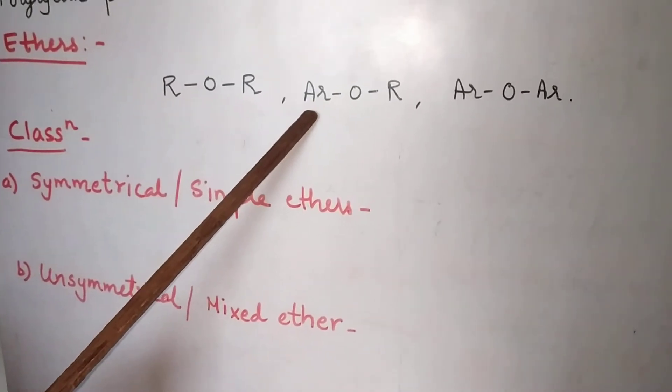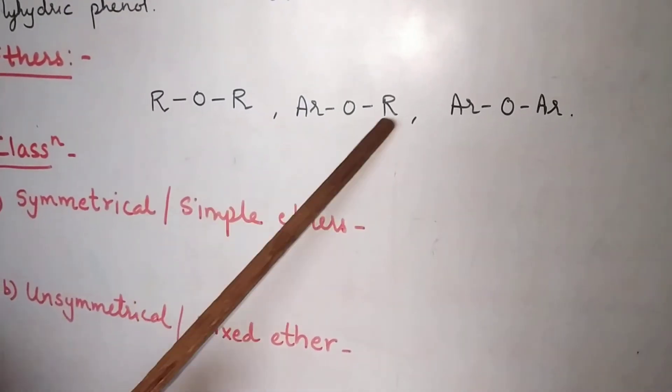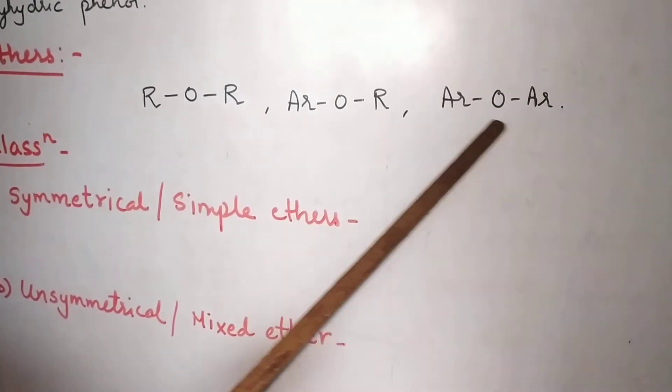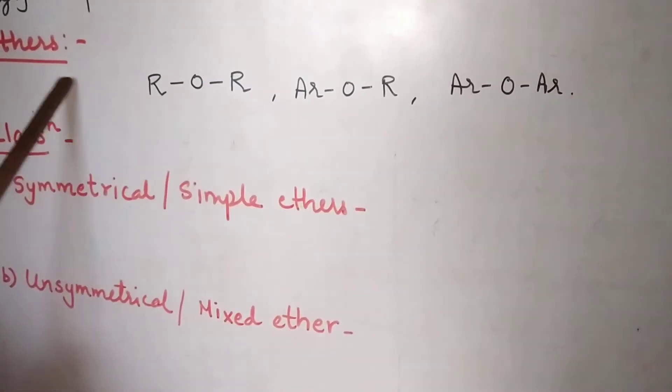Ar indicates aromatic, aromatic ring. Or oxygen is directly attached to two aromatic rings. What are ethers basically?